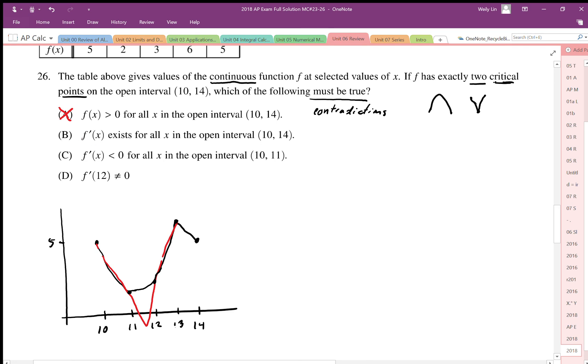For B, it says f prime exists for all x in the open interval. Well, that's again not necessarily true, because it's not necessarily smooth. Although it's continuous, we don't know that it's smooth. So it could have these kind of kinks in there, which means that f prime doesn't exist at certain points. So we're going to get rid of that.